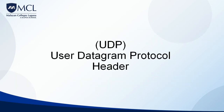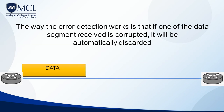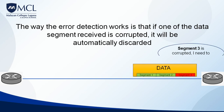Let's first discuss the User Datagram Protocol. The UDP header has a data checksum error field that provides error detection, usually 2 bytes (16 bits) long. The way checksum error detection works is: if a received data segment is corrupted, the receiving router will simply discard it. That is how UDP's error detection works.